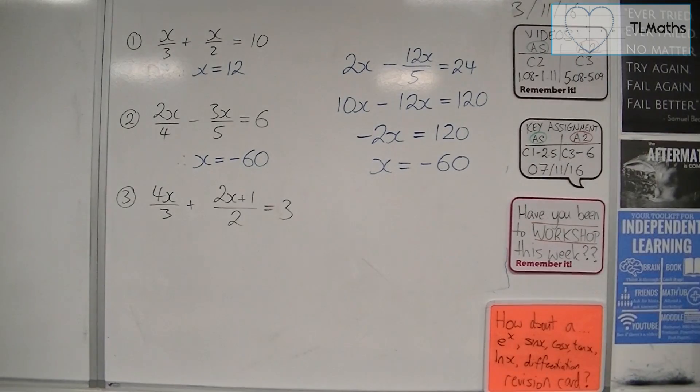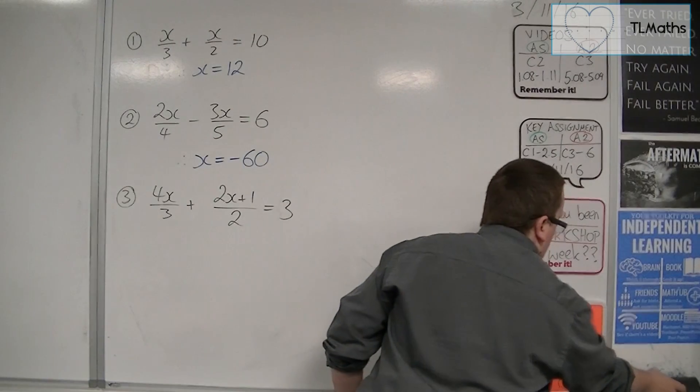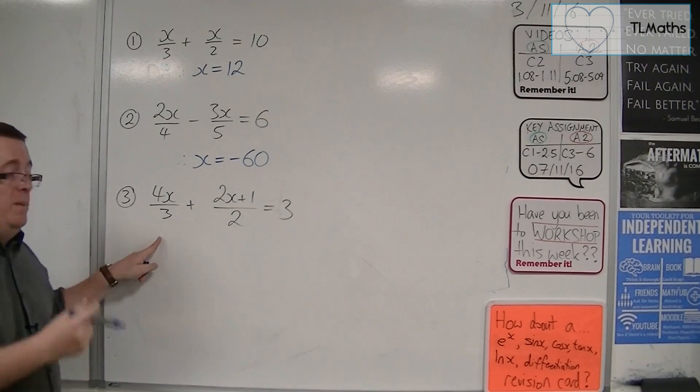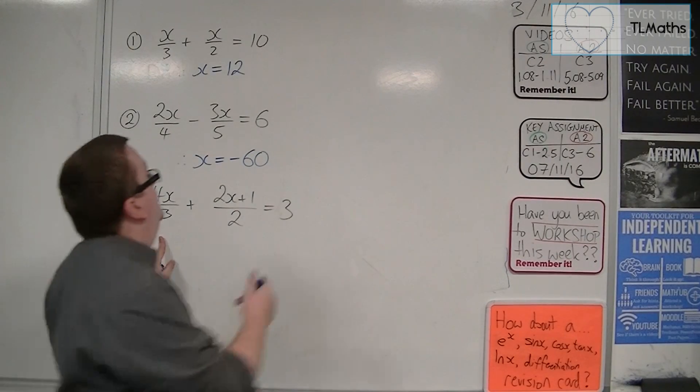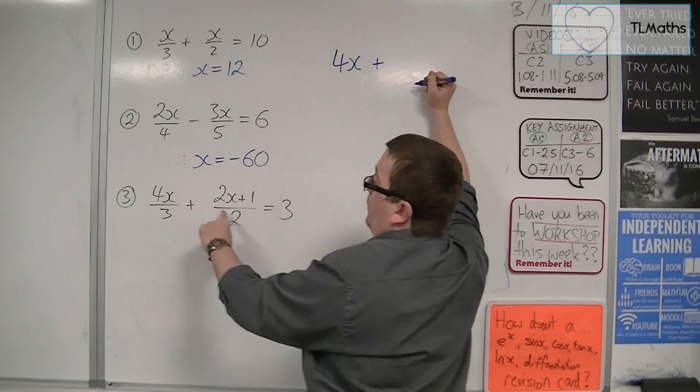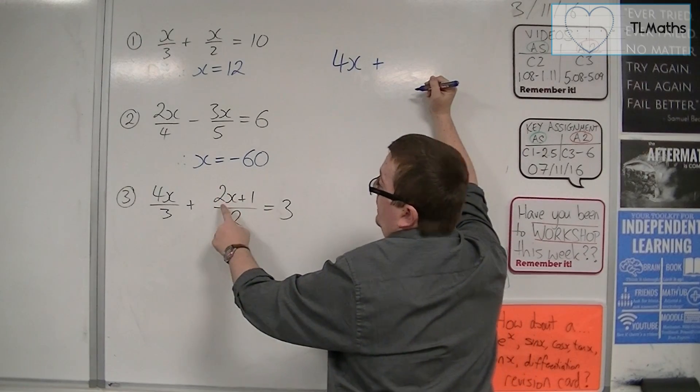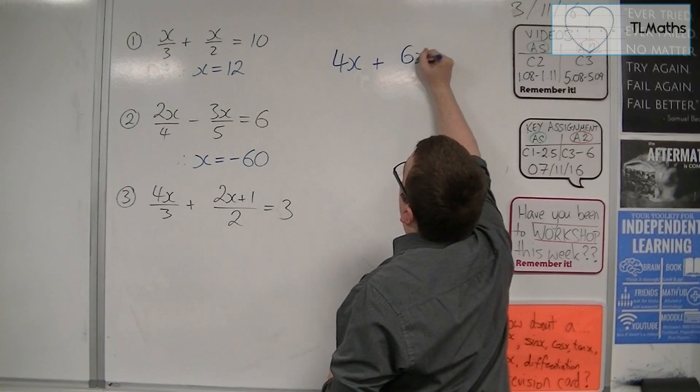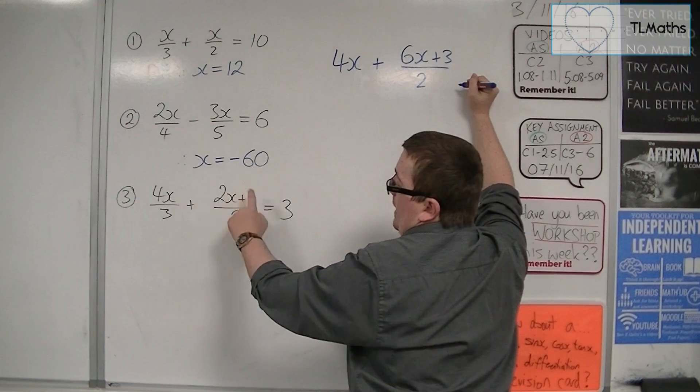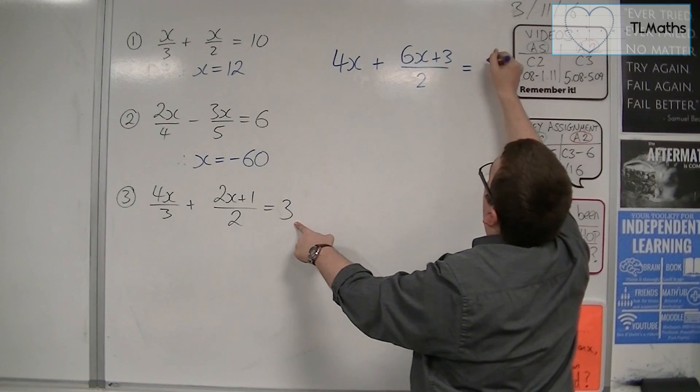And I'm going to use the same method for the third one as well. So the third one, I want to multiply everything by 3 first. So 4x plus, now remember the 3 just multiplies with the numerator. It doesn't matter what that numerator is. It's got to multiply with both terms here. So we're going to have 6x plus 3 over 2 now. So I've multiplied the 2x by 3 and the 1 by 3. And also, I've got to multiply that 3 on the right-hand side by 3. So I get 9.